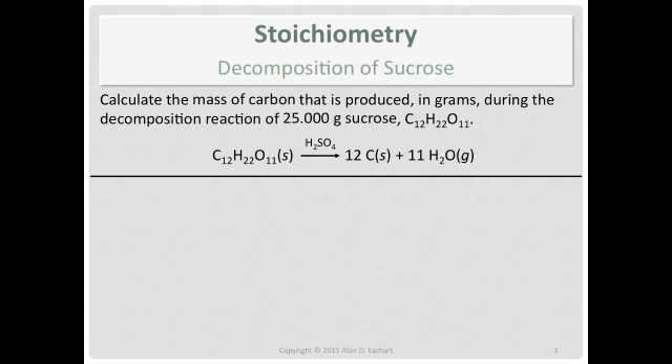Now for the calculation, we have a balanced chemical equation. You have to have that to do this. You'll notice that I do have state labels in the chemical equation, those are not needed to do the calculation. What are we given? We're given 25 grams of sucrose, which is a reactant. What are we looking for? How much carbon is produced.